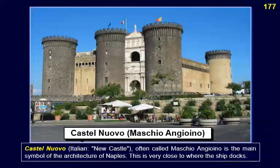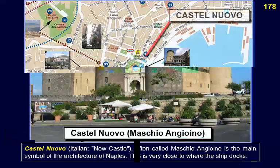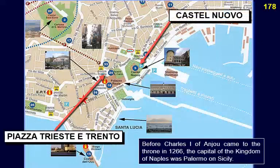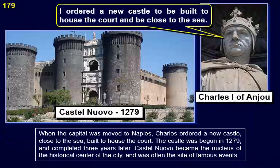Castel Nuovo, or New Castle — often called Maschio Angioino — is the main symbol of the architecture of Naples and is very close to where the ship docks. Before Charles I of Anjou came to the throne in 1266, the capital of the Kingdom of Naples was Palermo on Sicily. When the capital was moved to Naples, Charles ordered a new castle close to the sea. The castle was begun in 1279 and completed three years later. Castel Nuovo became the nucleus of the historical center of the city and was often the site of famous events.